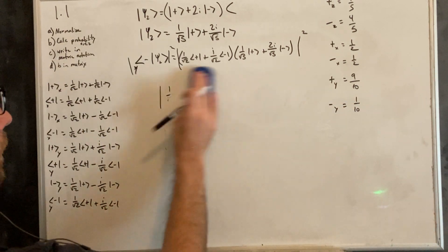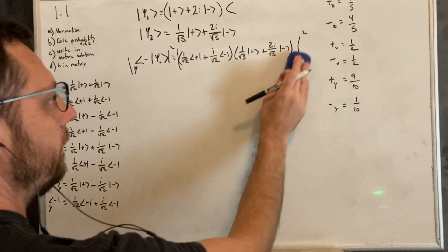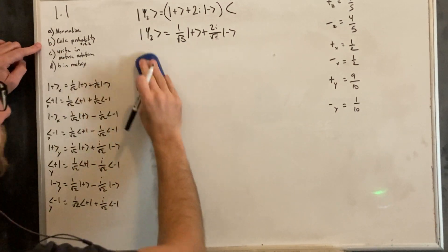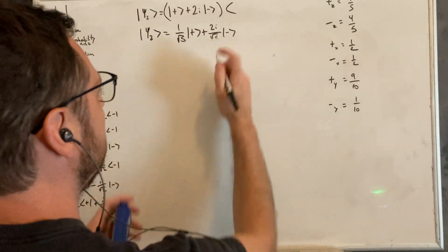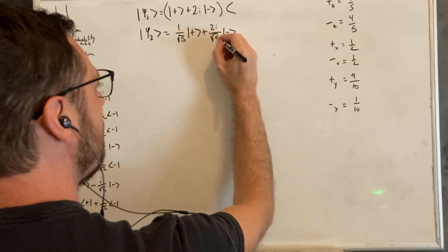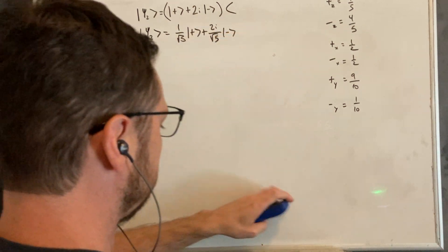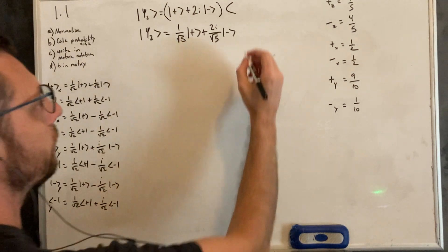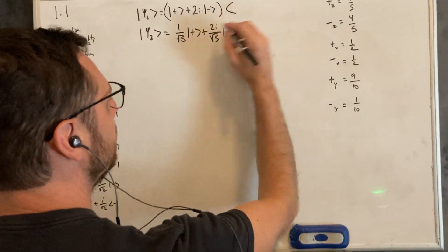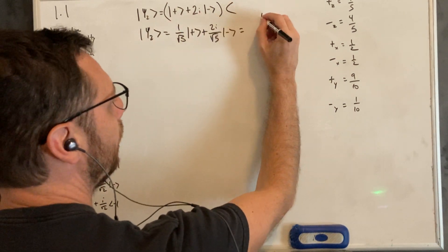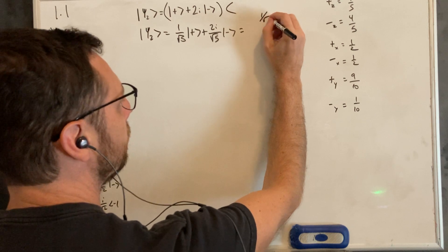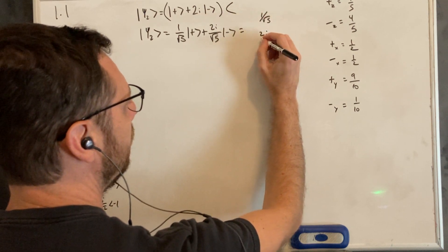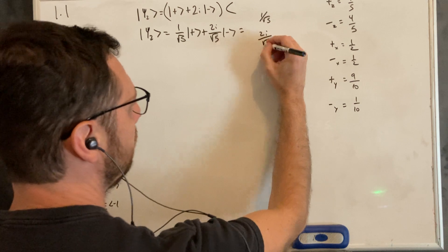So that's all of our probabilities. That's part b. Part c is to write this in matrix notation.